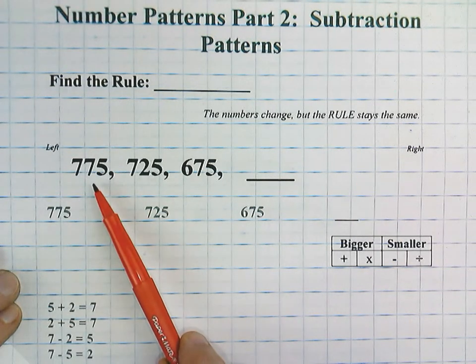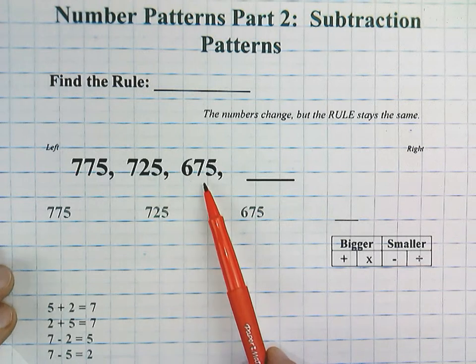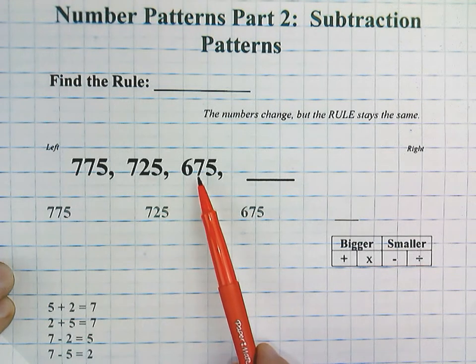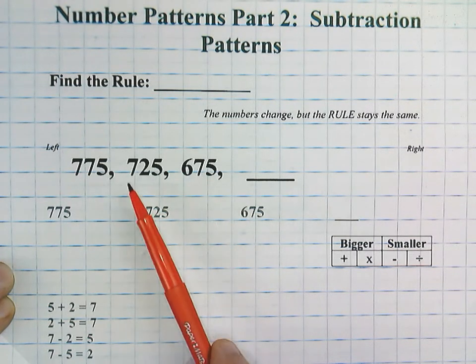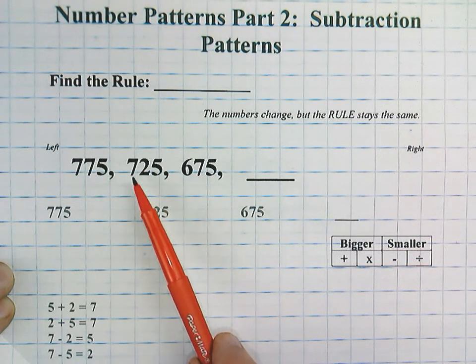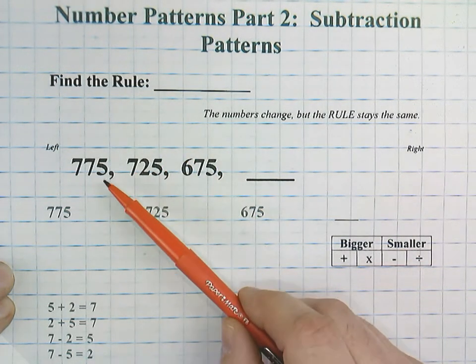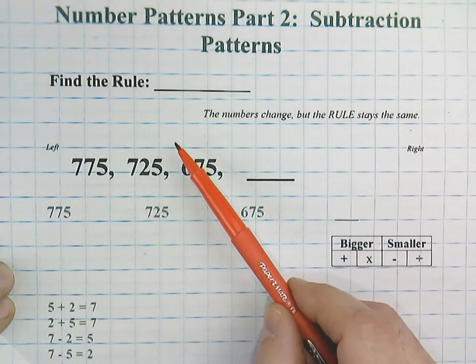For example, here we have 775, 725, 675, and your job is to figure out what is happening to these numbers. You see that the numbers are changing, and your job is to figure out what change is happening, and that is called the rule. The numbers change, but the rule will stay the same each time.